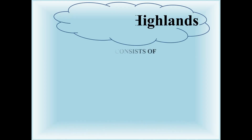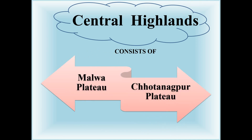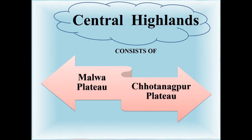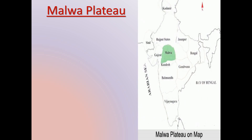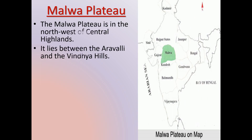Let's learn about the Central Highlands. The Central Highlands consist of the Malwa Plateau and the Chota Nagpur Plateau. Now let's learn about the Malwa Plateau in brief. As you can see in the map, the Malwa Plateau is in the northwest of the Central Highlands. It lies between the Aravalli Hills and the Vindhya Hills.